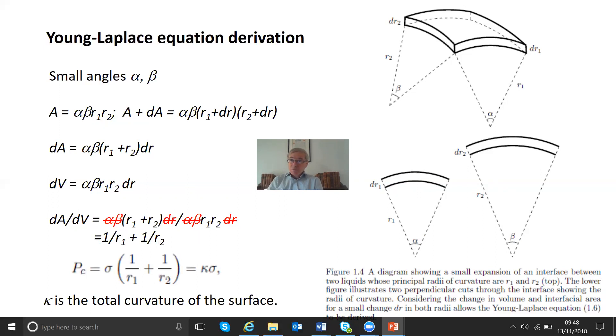So the capillary pressure is σ times this. So σ(1/R1 + 1/R2). And this can be written actually in terms of a curvature. Now the curvature κ, which is just defined as one over one radius of curvature plus one over the other radius of curvature. It has units of one over length. So κ is the total curvature. This is the capillary pressure. This is the Young-Laplace equation.